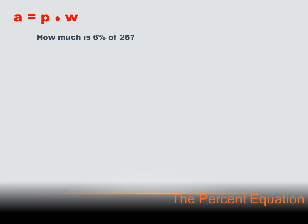Let's try a problem. How much is 6% of 25? I've got a 6% to circle and I've got a 25 to circle. I know that 6% goes where we're asking for the percent. And 25 — is it a part or is it a whole? It's the whole thing, because they're asking us how much would be a portion of 25. So let's substitute those in: A equals P times W becomes A equals .06 times 25. And .06 times 25 is 1.5. So 1.5 is 6% of 25.